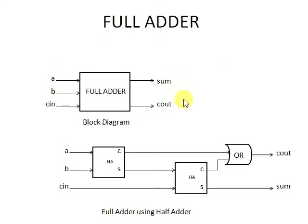There are two outputs: sum and C-out, that is carry out. This is the block diagram. We can also implement a full adder using two half adders. Here you can see three inputs A, B, and C.